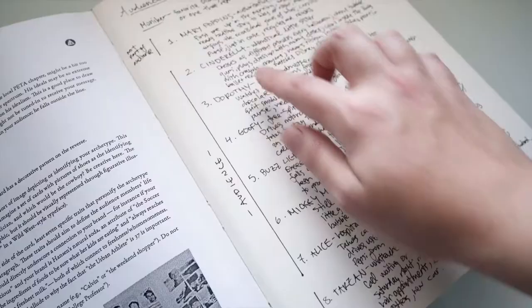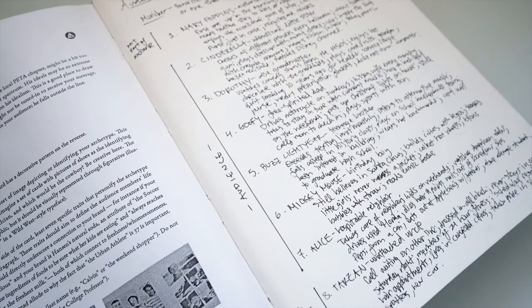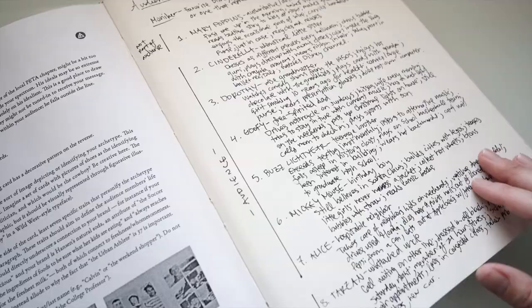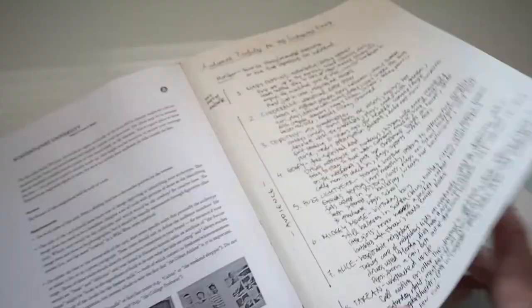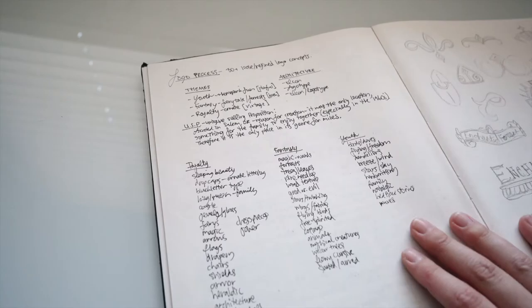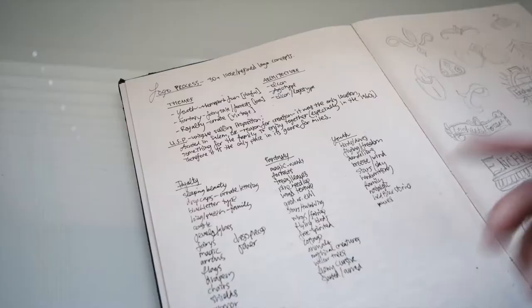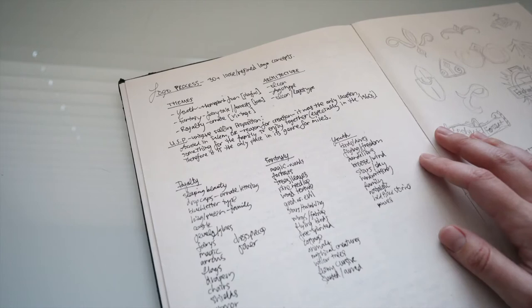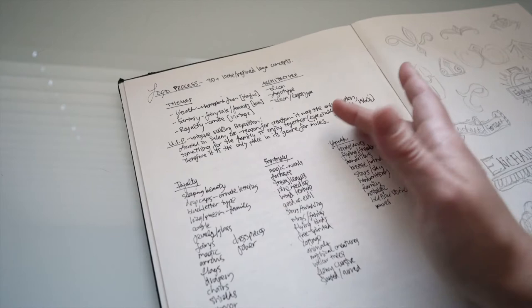We needed to work on creating basically profiles for eight different people that would be going to the place that we were creating an identity and logo and visual system for. And probably about into the fourth week is when we got into the actual logo process. And the way that we were taught to do this was to think in themes and architecture.